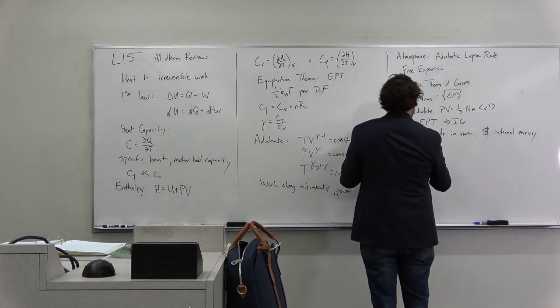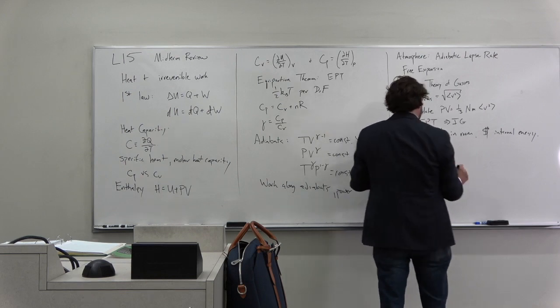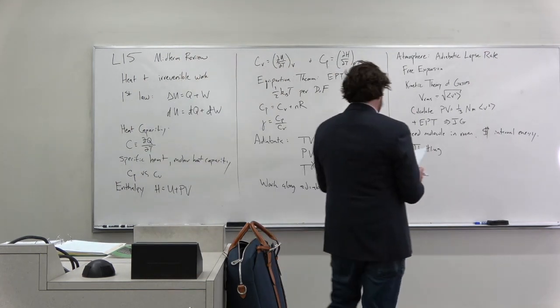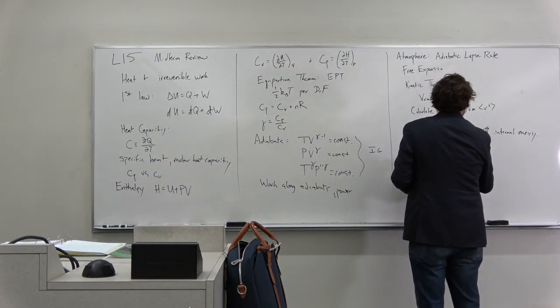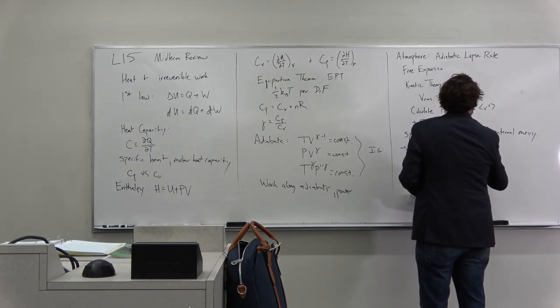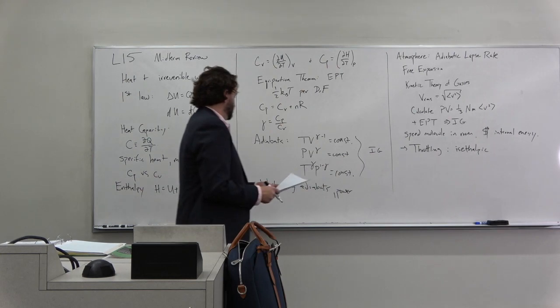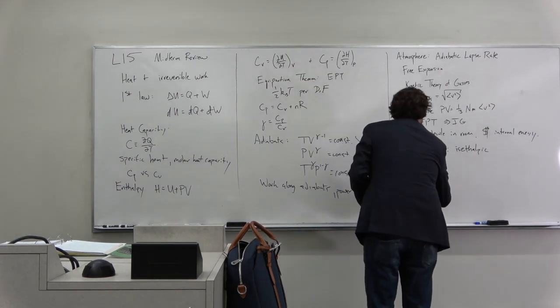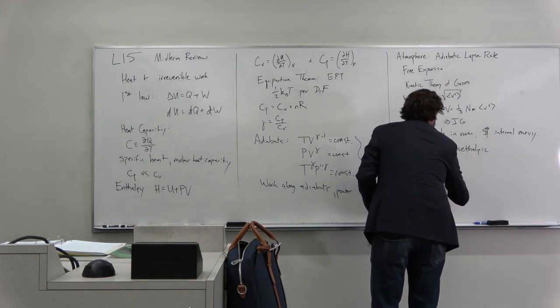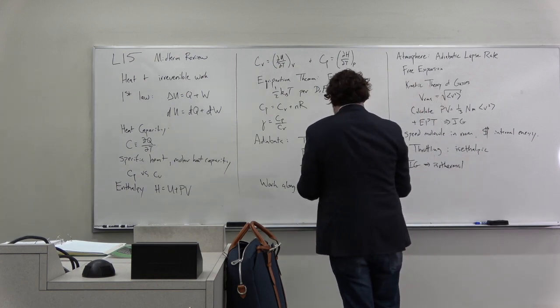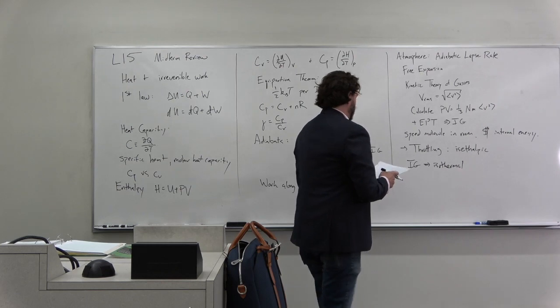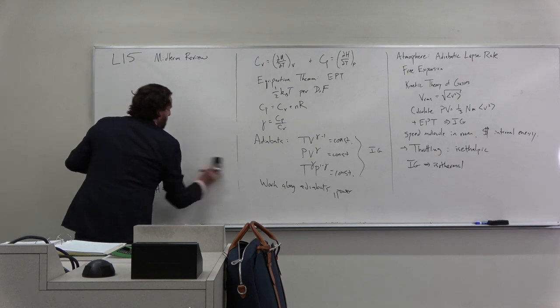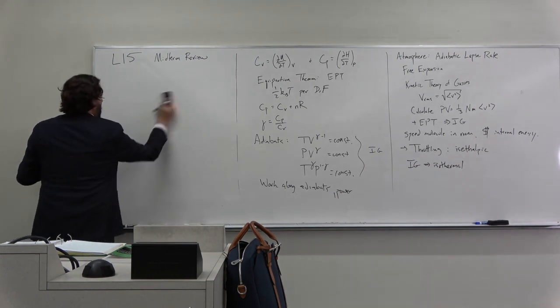We went on and did throttling. We did the demo. What kind of process is throttling? Which one of our processes is throttling? It's isenthalpic, constant enthalpy. For an ideal gas, that's also isothermal. But we did the demo and it wasn't. So this led us to thinking about the hard sphere gas, taking into account the attractions between the molecules.